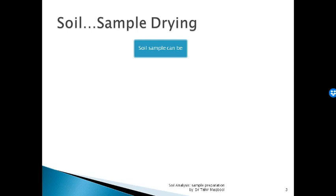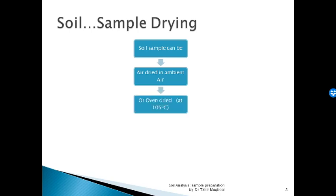For drying the soil sample, there are two methods. You should maintain the temperature at 105 degrees Celsius for oven drying.